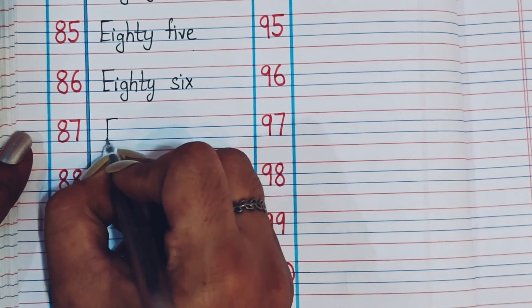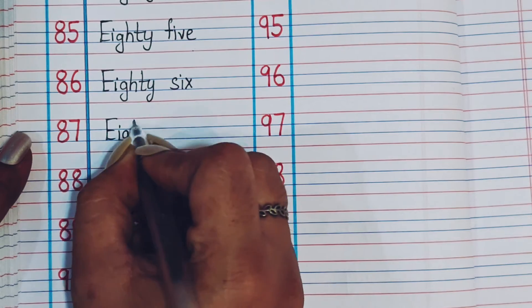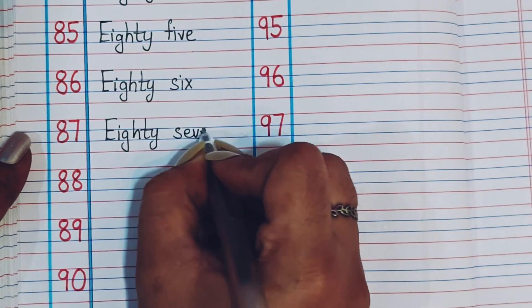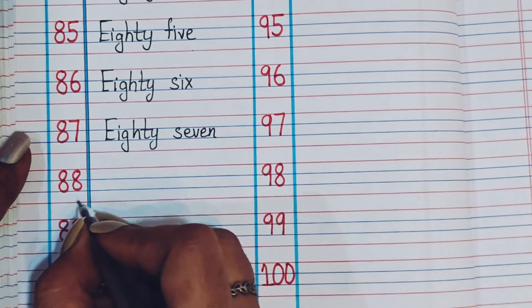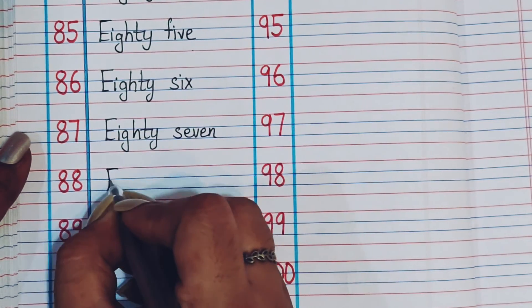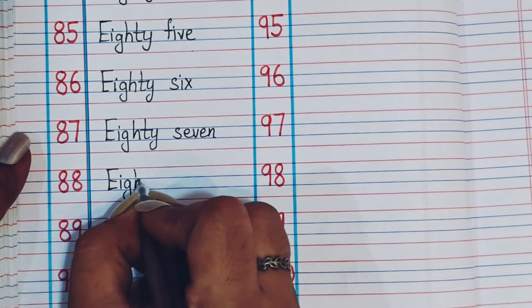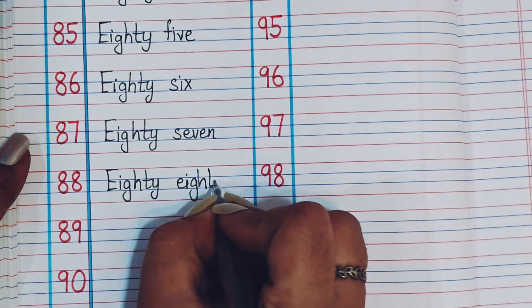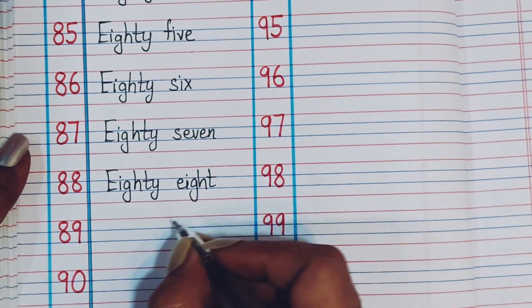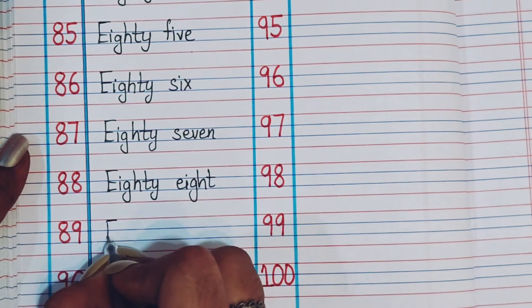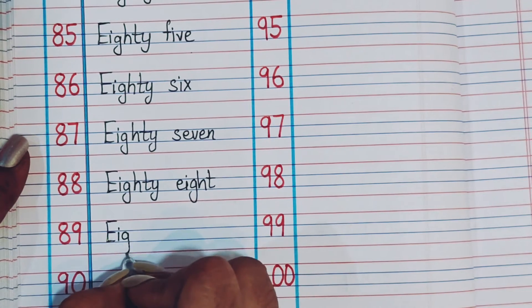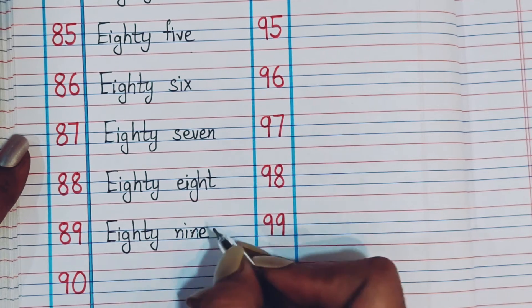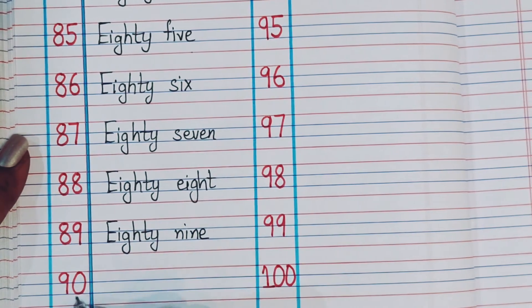87 - E-I-G-H-T-Y S-E-V-E-N, 88 - E-I-G-H-T-Y E-I-G-H-T, 89 - E-I-G-H-T-Y N-I-N-E, 90 - N-I-N-E-T-Y.